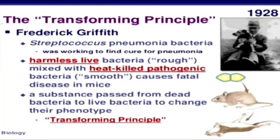In 1928, Frederick Griffith, in a series of experiments with Streptococcus pneumoniae, witnessed a miraculous transformation in bacteria. During the course of his experiment, a living organism had changed in physical form. When Streptococcus pneumoniae bacteria are grown on a culture plate, some produce smooth shiny colonies while others produce rough colonies. This is because the S-strain bacteria have a mucous polysaccharide coat while R-strain bacteria do not. Mice infected with the S-strain virulent die from pneumonia infection, but mice infected with the R-strain do not develop pneumonia.